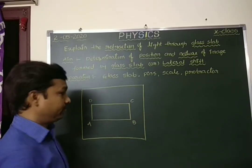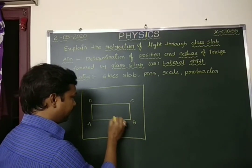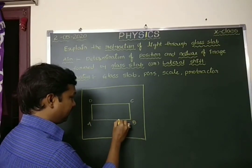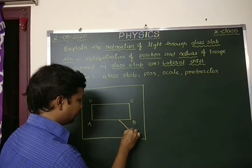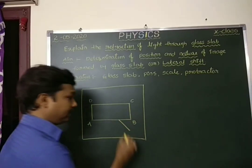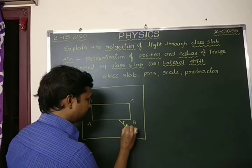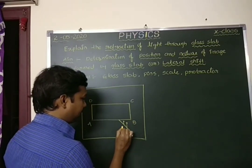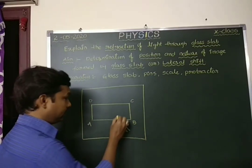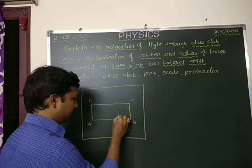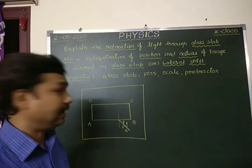Then we need to draw one incident ray line at any position along the lengthwise direction. I am drawing a line like this. Over this line, I am placing two pins, naming them P and Q. Then I draw a normal at the point where the ray touches the AB line.